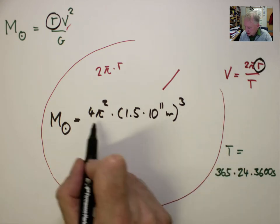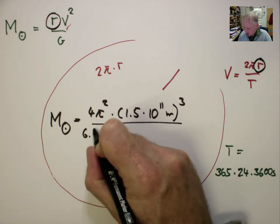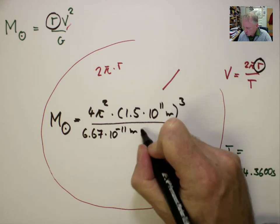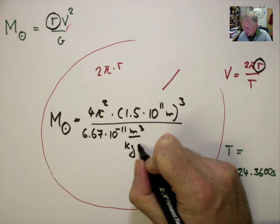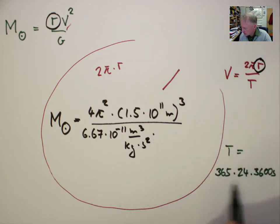And we're dividing by G, which is equal to 6.67 times 10 to the minus 11 meters cubed, divided by kilogram, divided by seconds squared. And if we then substitute for T.